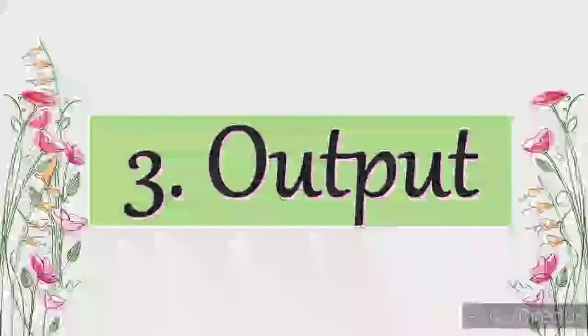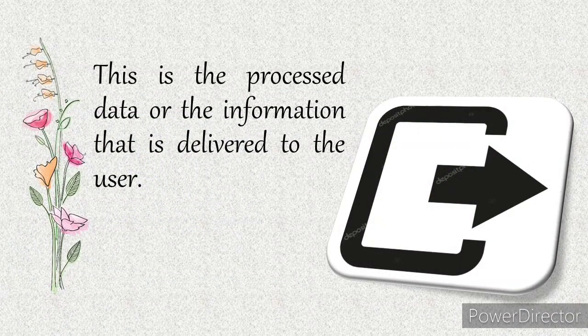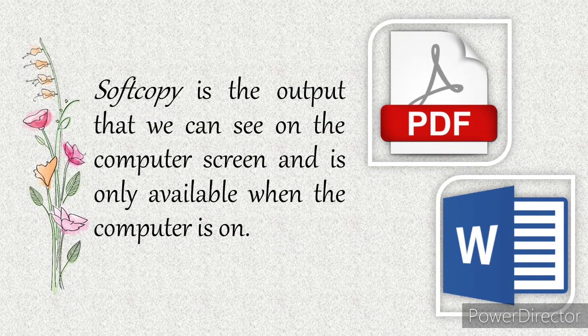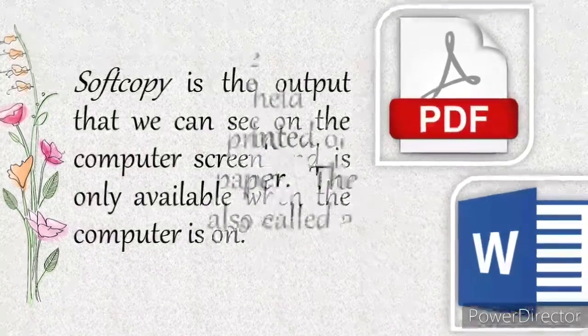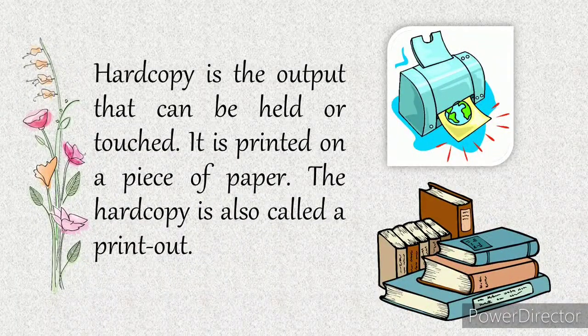The third function is the output. This is the processed data or the information that is delivered to the user. An output can be in the form of a soft copy or a hard copy. When we say soft copy, it is the output that we can see on the computer screen and it is only available when the computer is on. While hard copy is the output that can be held or touched — it is printed on a piece of paper.